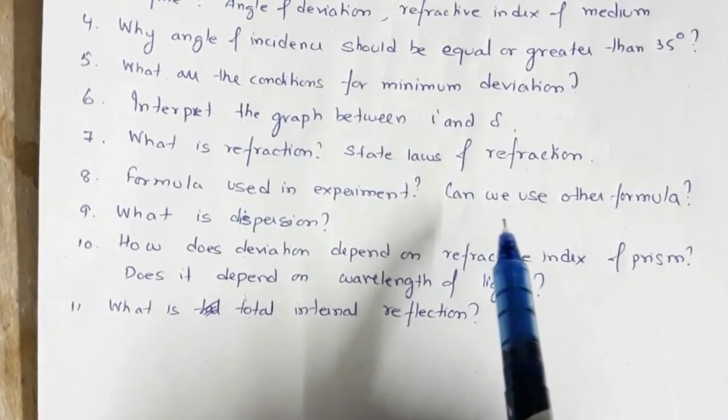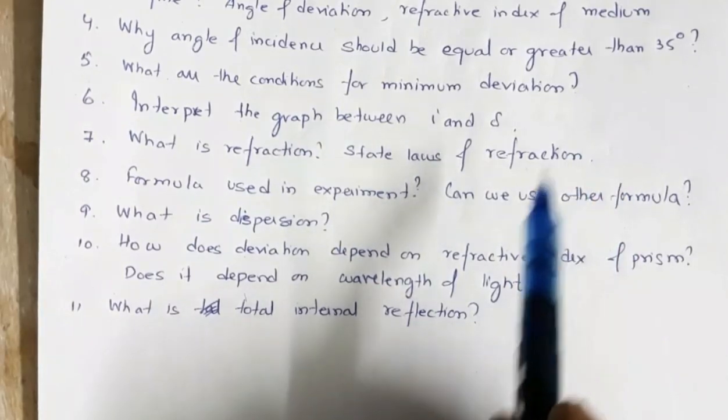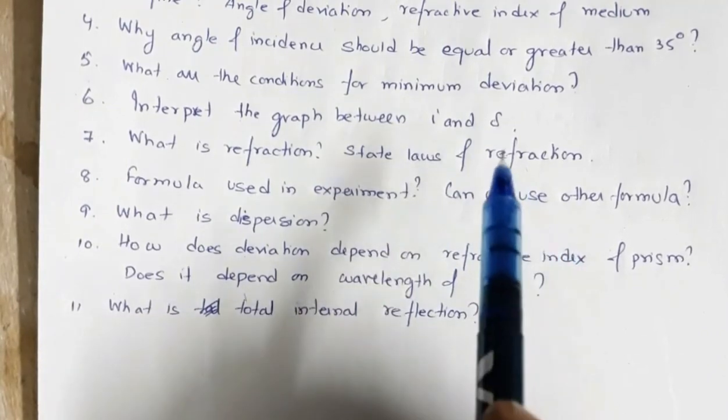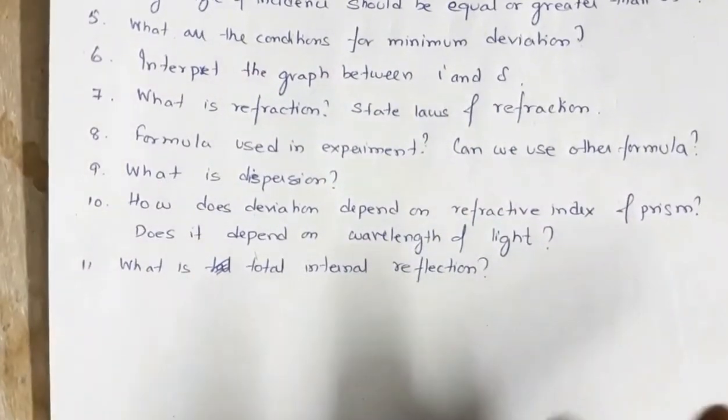You can use the Snell's law, mu is equal to sine i by sine r. You can calculate the angle of incidence on one surface and the angle of refraction and from that find the value of sine i and sine r. From that, you can calculate the value of refractive index.